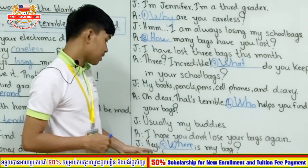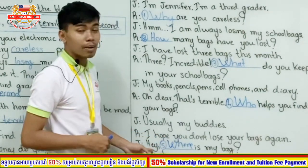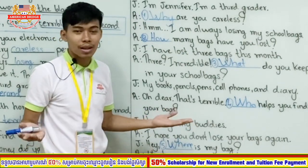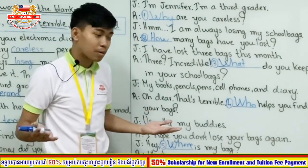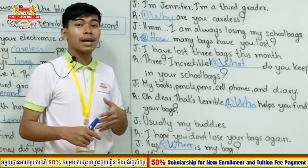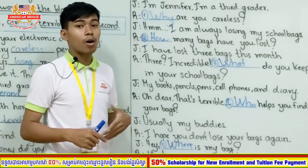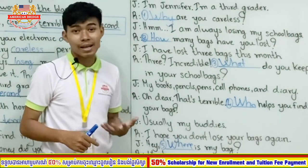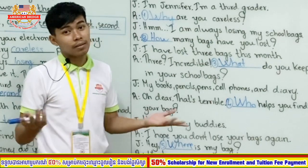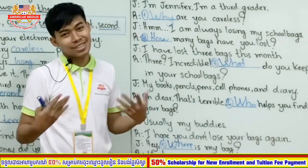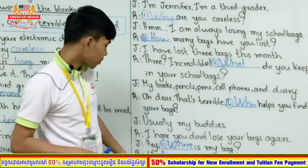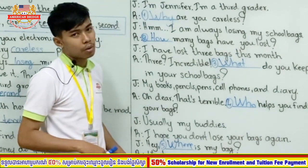Number five is 'where' — the reporter was hoping Jennifer wouldn't lose her bag again, but she immediately says 'Where's my bag?' So this month she has now lost four bags. It's incredible! So the reporter is interviewing a careless person who keeps losing bags, and even during the interview she loses another one.